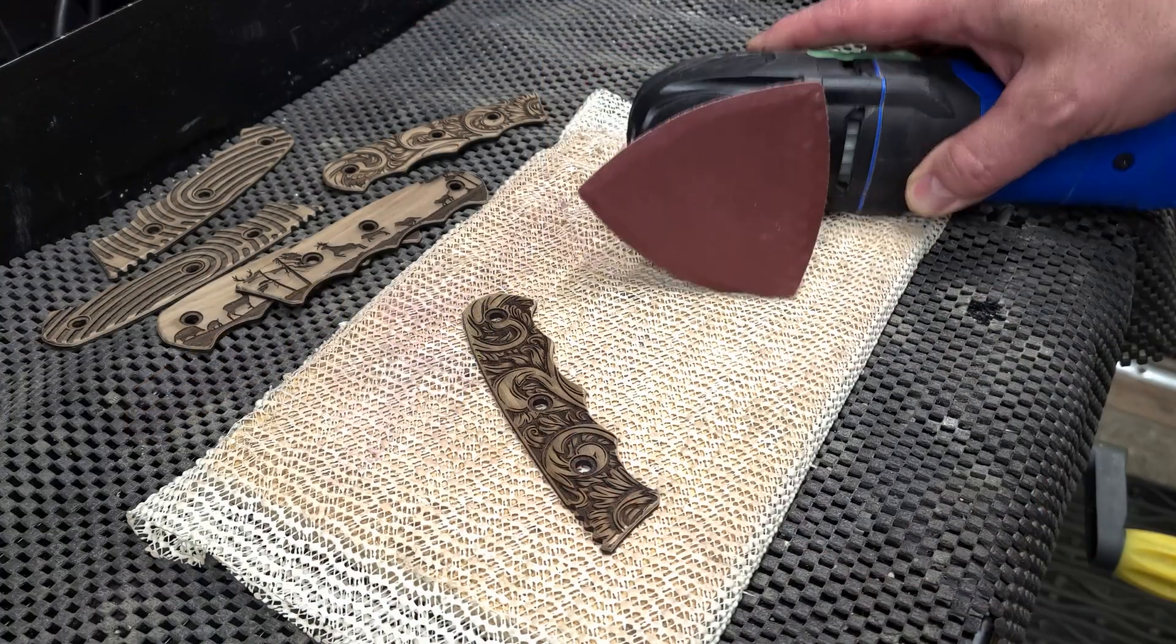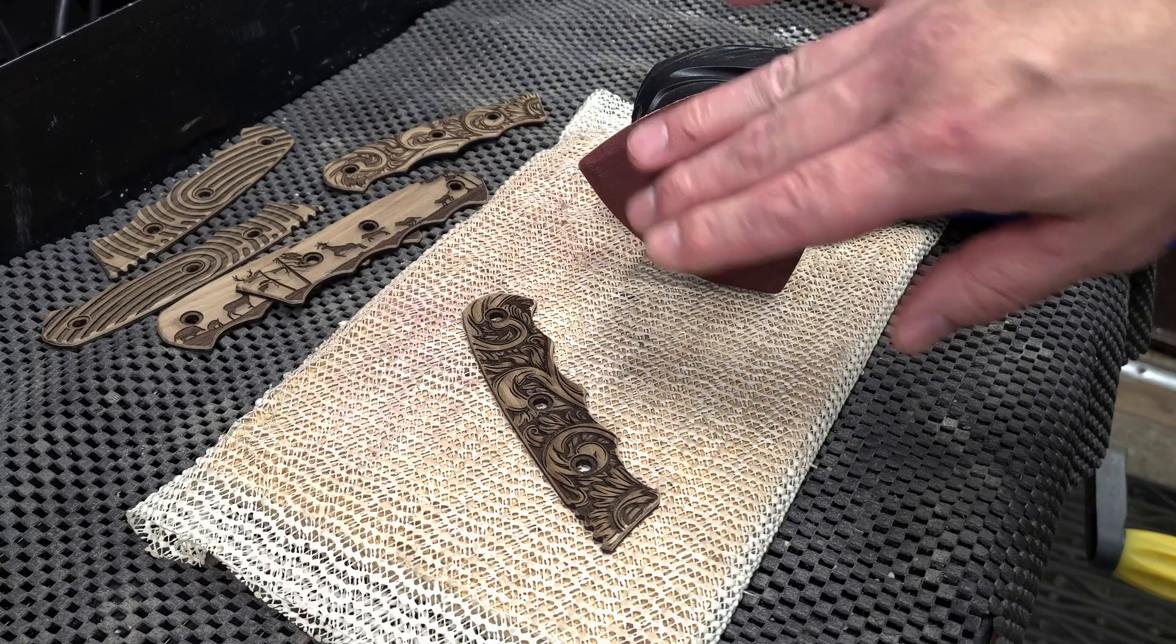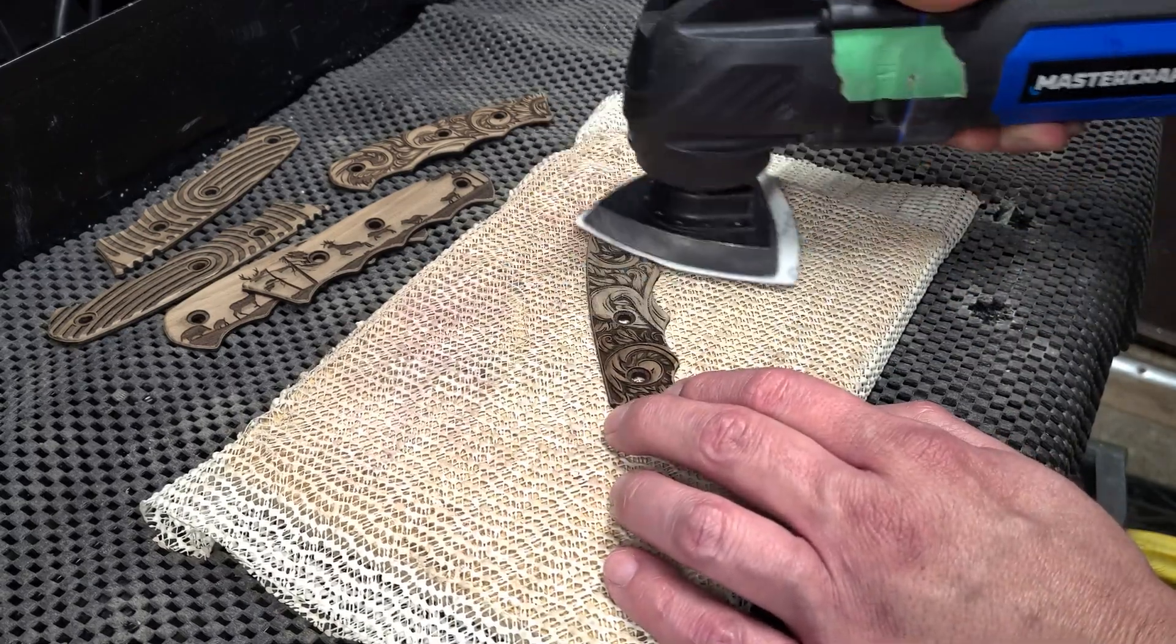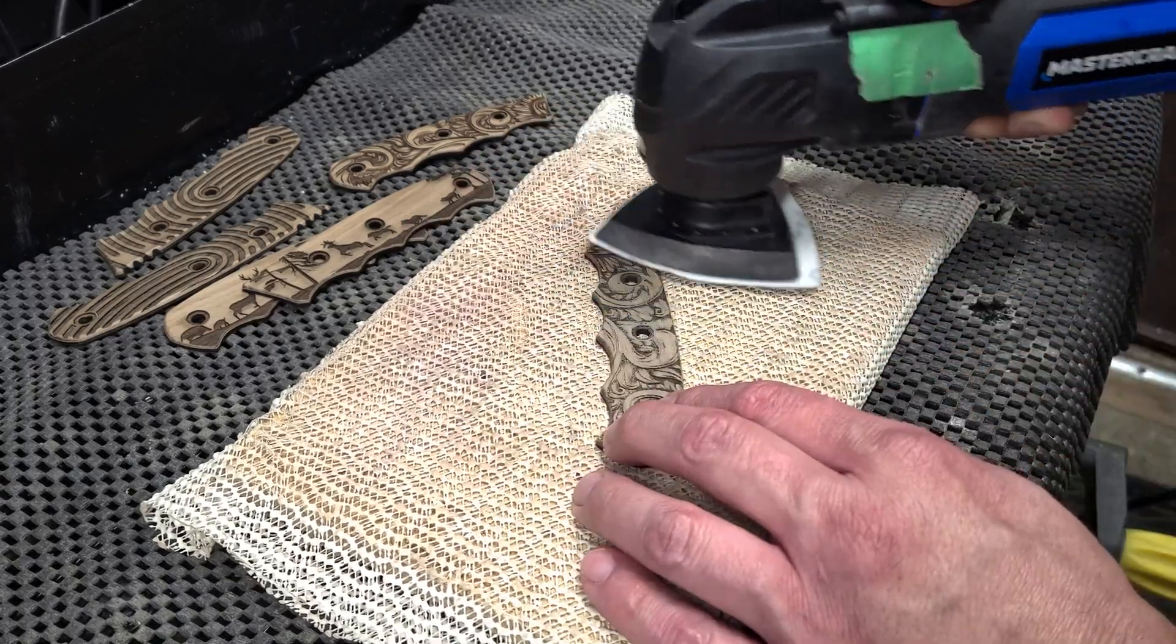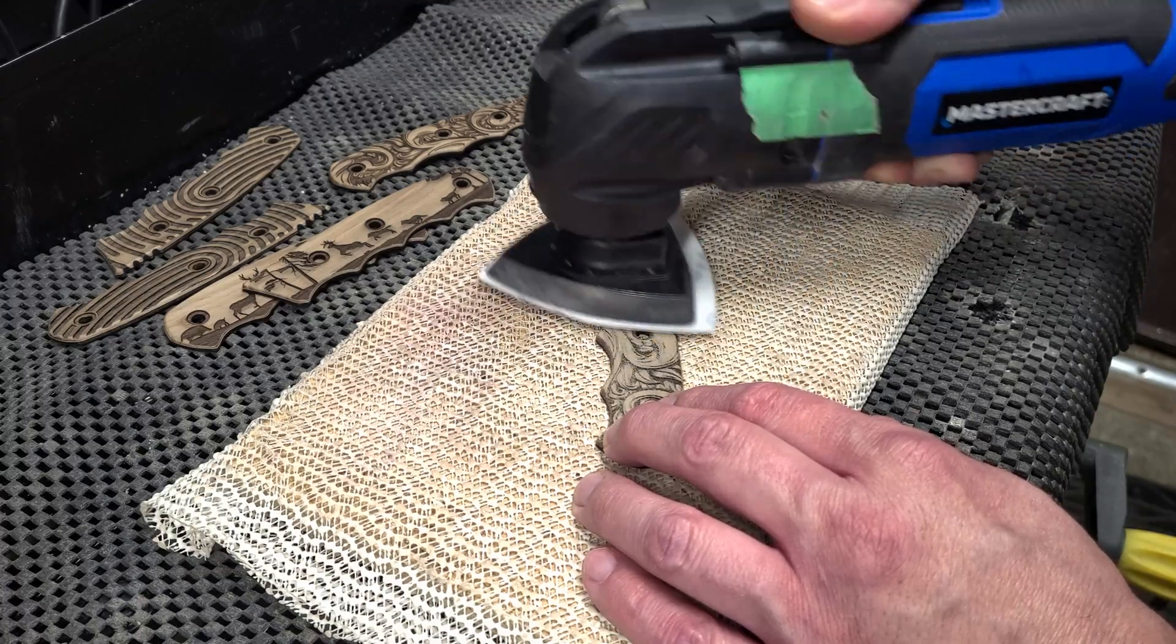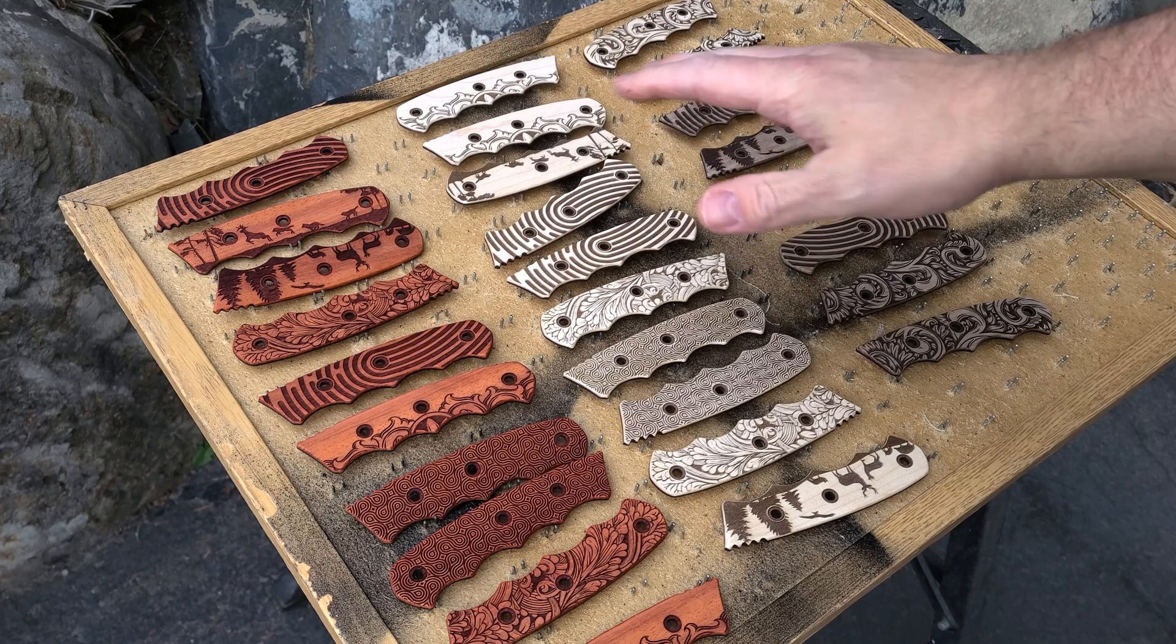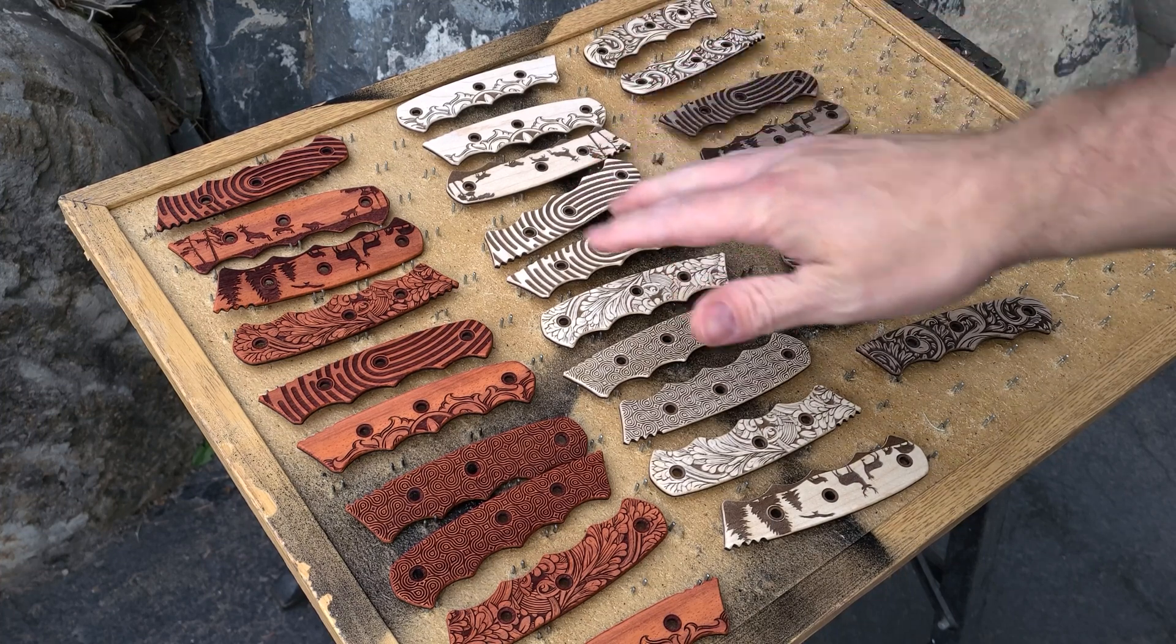Let's now give these scales a quick sanding. For this I'll be using 240 grain sandpaper.